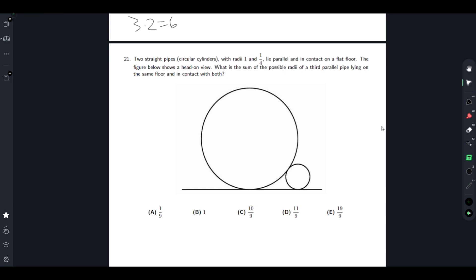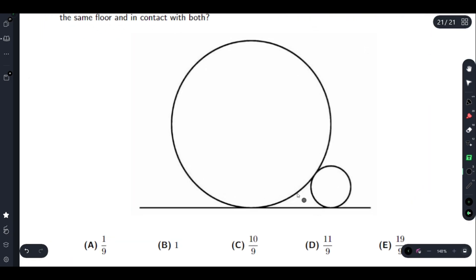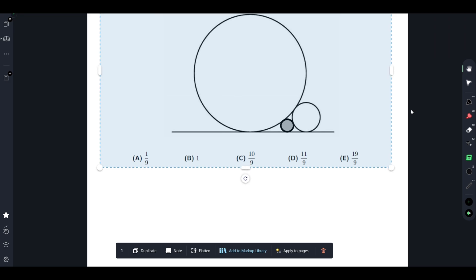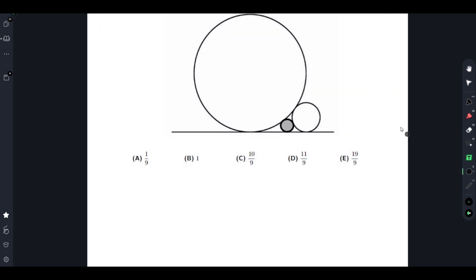What is the sum of the possible radii of a third parallel pipe lying on the same floor and in contact with both? What we notice is that these are the two possible values. We either have a circle here or we have a circle like here.